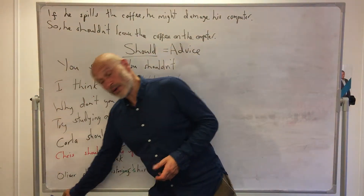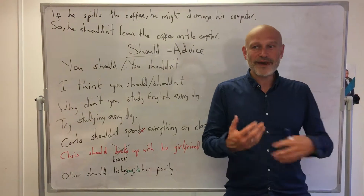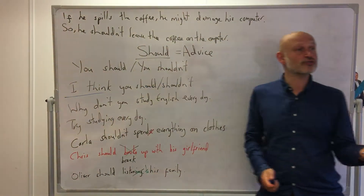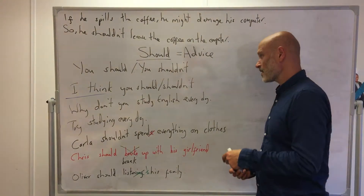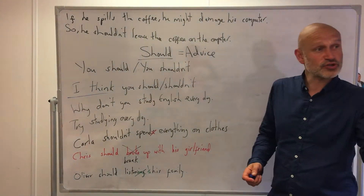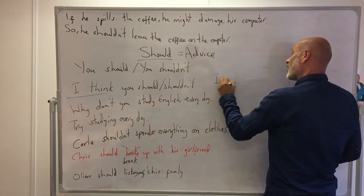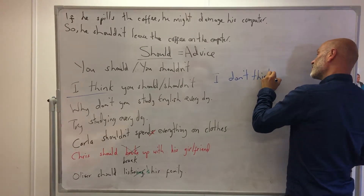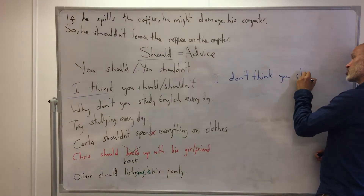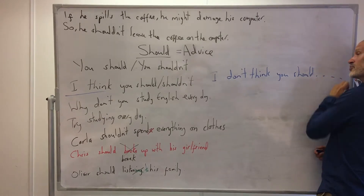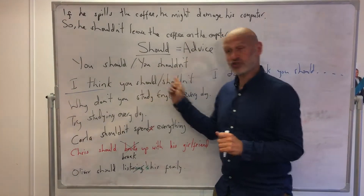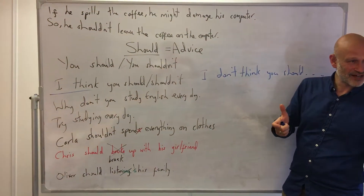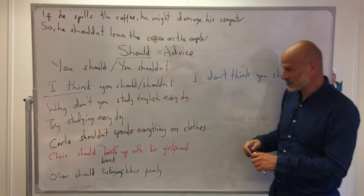Really, when we give advice it's always about what we think. So we usually start the sentence with 'I think you should' or 'I think you shouldn't.' You could also say 'I don't think you should do that' — it's just a different way of saying 'I think you shouldn't.'